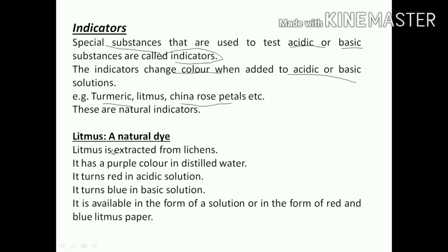Litmus. Litmus is a natural dye - here dye does not mean death, here dye means color. So litmus is a natural color. Litmus is extracted from lichens. These lichens are purple in color. When they are dissolved in distilled water, they give purple color. And it turns red in acidic solution.